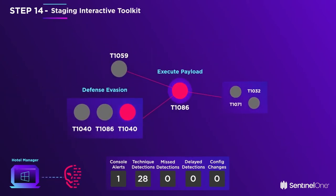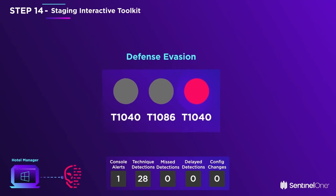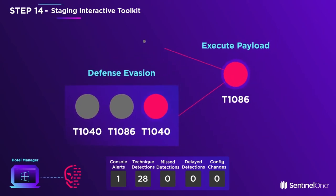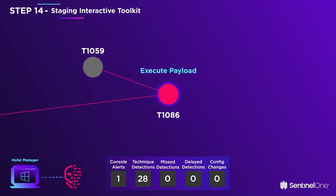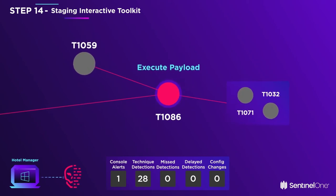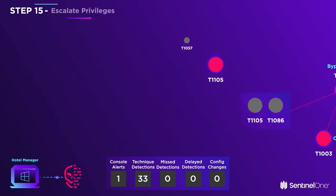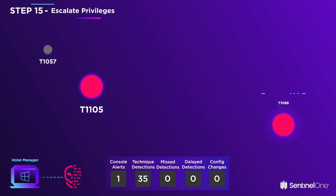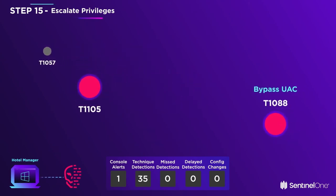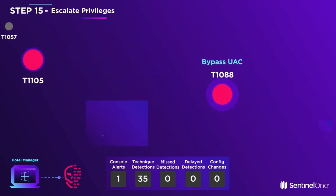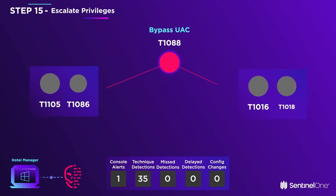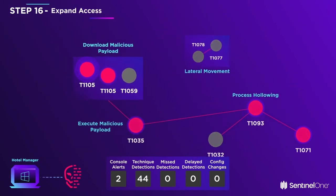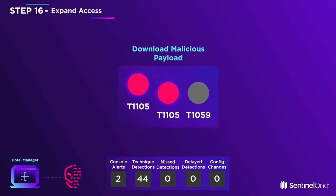The mischief continues on the hotel manager's PC as the script abuses PowerShell to load shellcode from memory. A new network connection is made to the C2 server. The evil hacker downloads malware from his C2, then triggers it within a PowerShell spawned from another PowerShell. The local OS's credential store is dumped for his use, and more malware is downloaded from the C2 server.